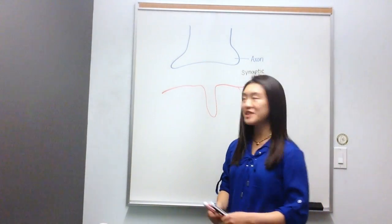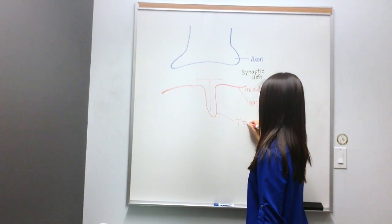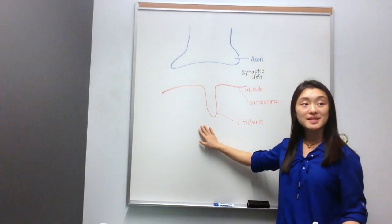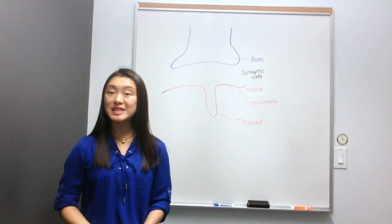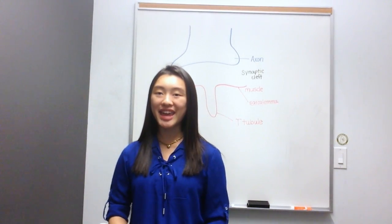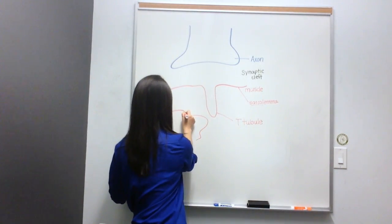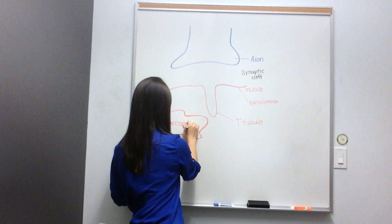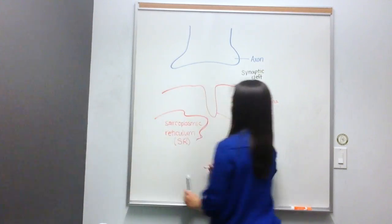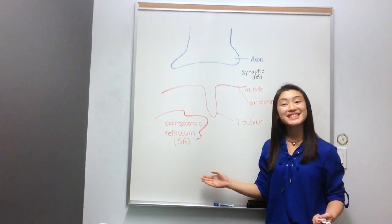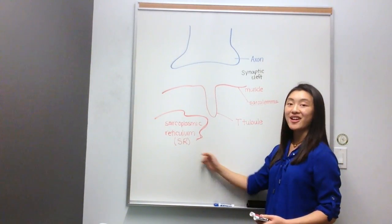Another bit of terminology: this divot in the muscle cell is known as a T-tubule, because it looks like a T. Also within the muscle cell, we will find organelles. Just like a cell would have an endoplasmic reticulum, a muscle cell will have a sarcoplasmic reticulum, often abbreviated SR.